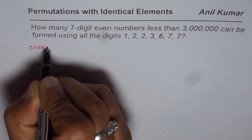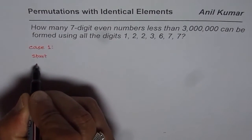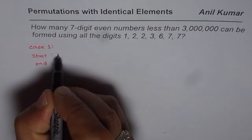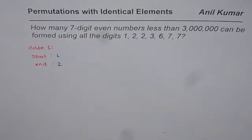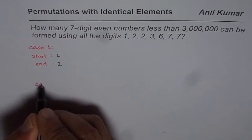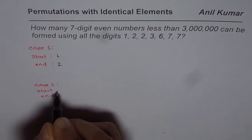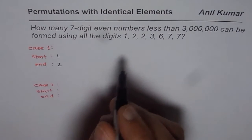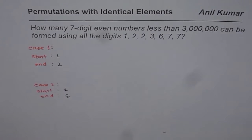We have case 1 in which the starting number and the ending number could be - let us say we start with 1 and then to make it even you could either end with 2 or 6. So let's take case 1 where you end with 2. Let's take case 2 where starting number is again 1 and ending number this time is 6. That will also make it even.